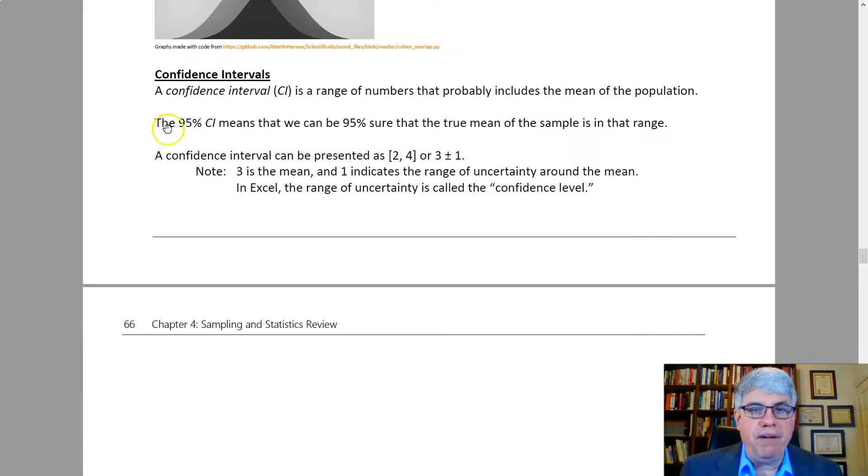The 95% confidence interval means that we can be 95% sure that the true mean of the sample is in that range. If we say the average height is five foot six, the confidence interval might be one inch on either side, going from five-five to five-seven. We'd be 95% sure that the true average height of humans is in that range. That would be our 95% confidence interval.